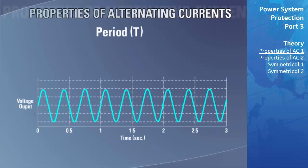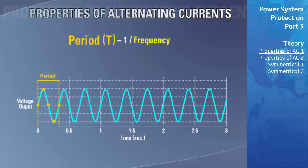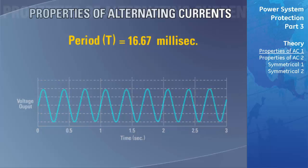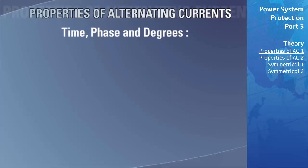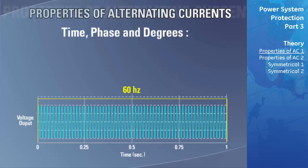To generate one cycle of alternating current, the exciter must complete one revolution. The time taken for the resulting waveform to go through one complete cycle is referred to as the period, represented by the symbol T, and equals one second divided by the frequency. For example, the period of a 60 hertz waveform is 1/60 = 16.67 milliseconds.